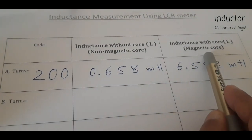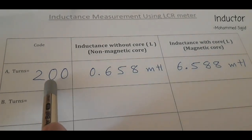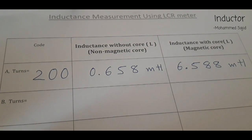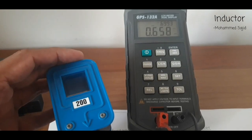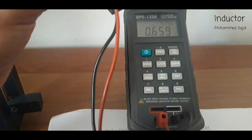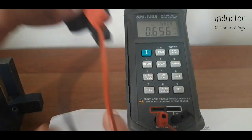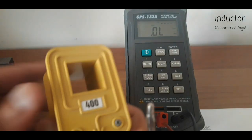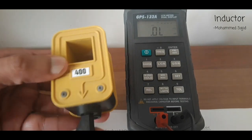Now we will check the effect of number of turns on inductance. We will change the coil and take readings with the 400-turn coil. I am disconnecting the first coil from the LCR meter and removing the wires. We will again take two readings — first without core material, then with core material.